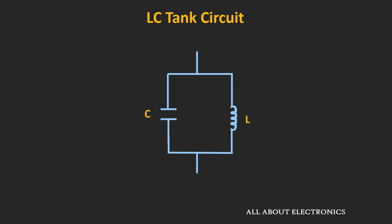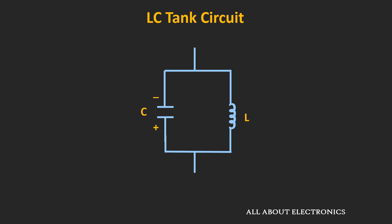Gradually, the energy stored in the inductor gets converted back into electrostatic energy of the capacitor. Once the capacitor is fully charged again, it discharges through the inductor in the reverse direction. In this way, energy keeps transferring between the inductor and capacitor, producing oscillations. The frequency of oscillation is given by 1 divided by 2π times the square root of LC.